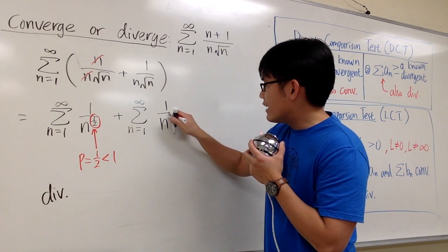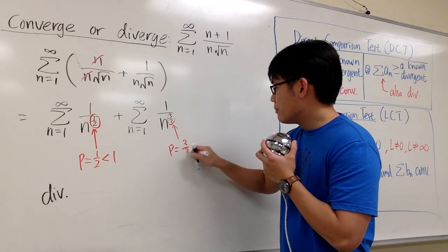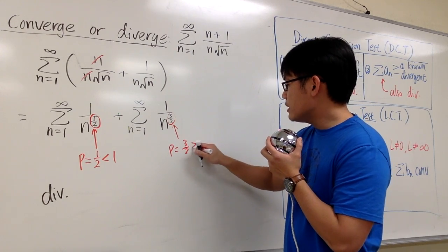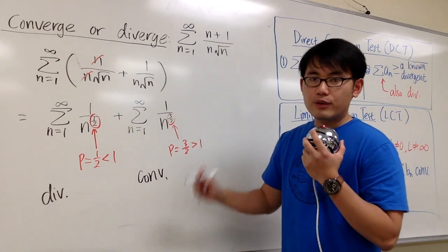And then for the second one, we have three-half for the p, but that three-half is bigger than one. Therefore, this part, this series by itself, it converges.